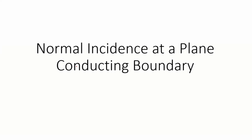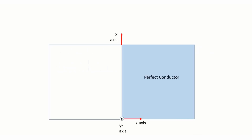Hello friends, today we are going to see about normal incidence at a plane conducting boundary. When an electromagnetic wave is incident on a perfect conductor, assume that medium one has conductivity zero with some permeability and permittivity — assume it is free space. Now, assume the perfect conductor is medium two, having these parameters.